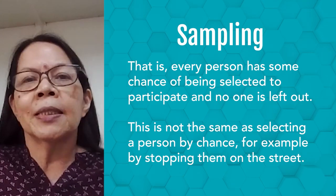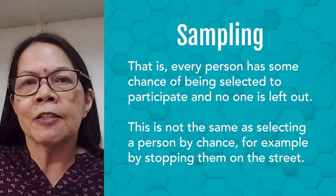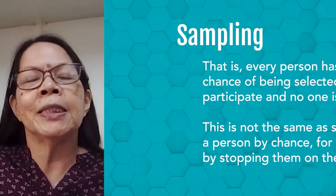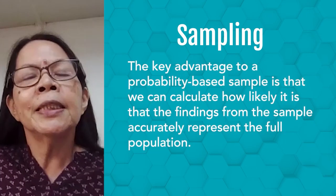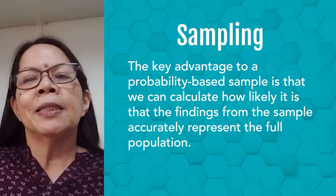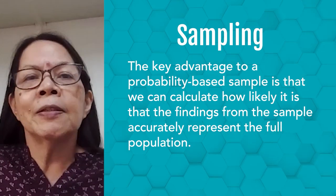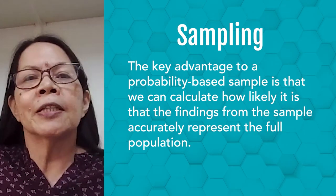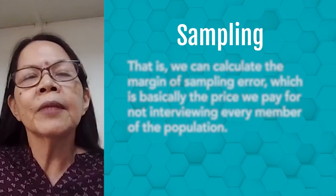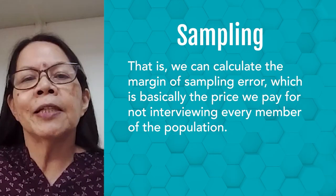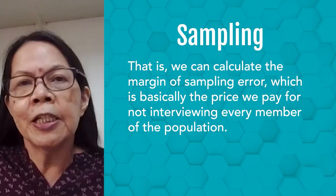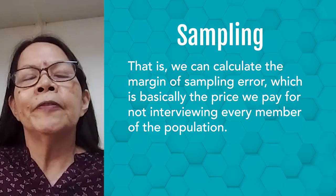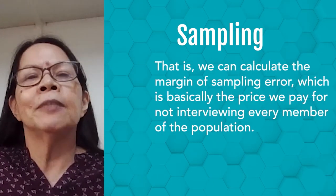This is not the same as selecting a person by chance, for example by stopping a person on the street — that is not a probability sample. The key advantage to a probability-based sample is that we can calculate how likely it is that the findings from the sample accurately represent the full population. That is, we can calculate the margin of sampling error, which is basically the price we pay for not interviewing everyone in the population.